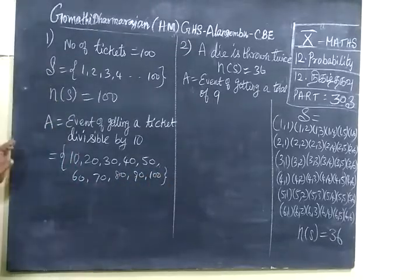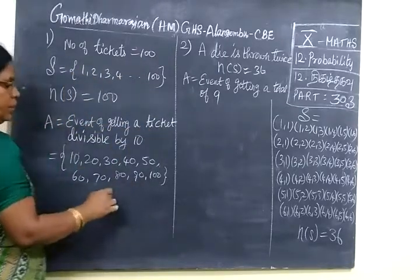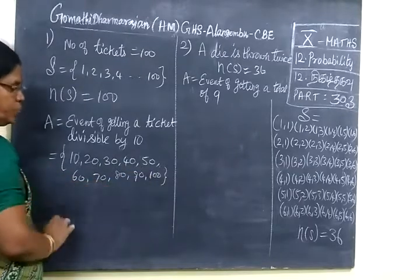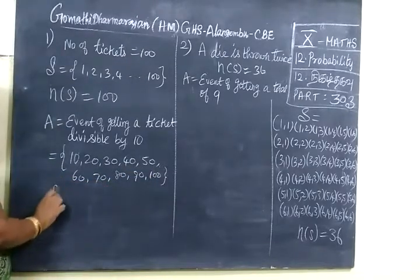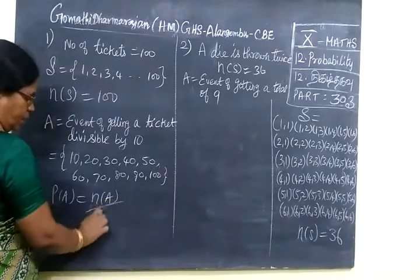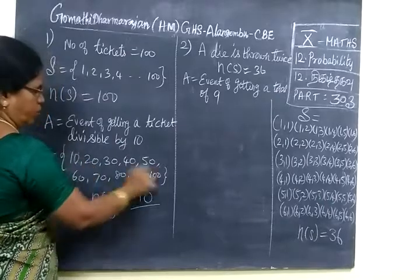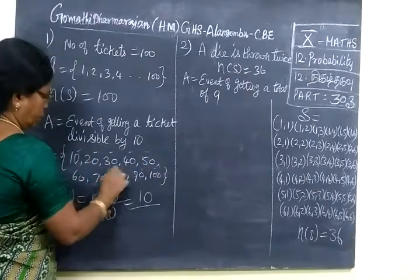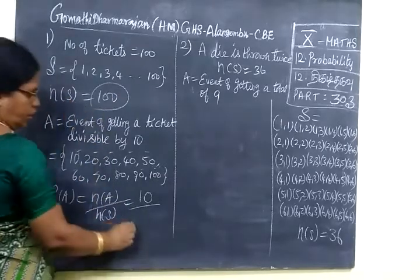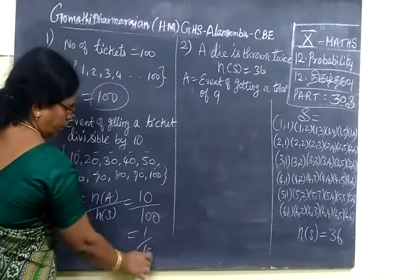So all these numbers are divisible by 10. From 1 to 100 we are selecting the tickets with the number divisible by 10. So P(A) equal to n(A) by n(S). So n(A) is 10, so here we are having 10 numbers, and n(S) we are having 100. So if we cancel you get 1 by 10.